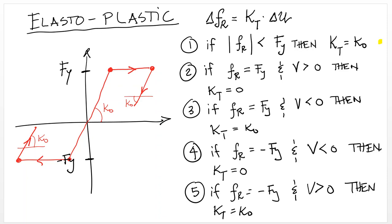If the velocity is positive, you stay on the plateau. If the velocity is negative, you start coming down on the linear range. And if your force is negative and your velocity is negative, you stay on the plateau. If the force is in the plateau and the velocity is positive, then you come back to the linear branch.